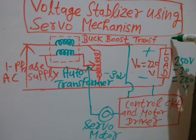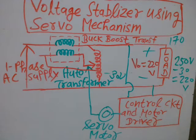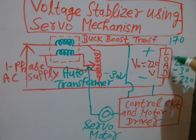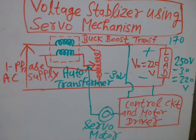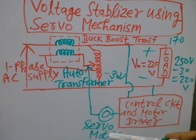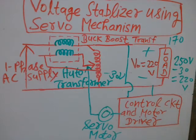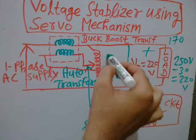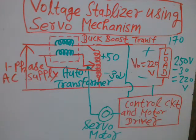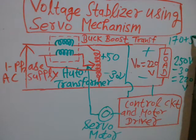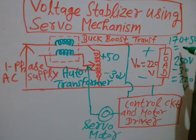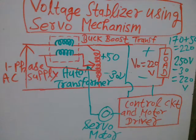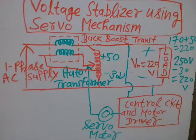Similarly, if an under-voltage of 170 volts appears across the load — which is 50 volts below the rated 220V — the control circuit senses this abnormality and sends a command signal to the servo motor. The servo motor moves the stylus to produce a compensating voltage of plus 50 volts, which is added so that 170 plus 50 equals 220 volts at the load.